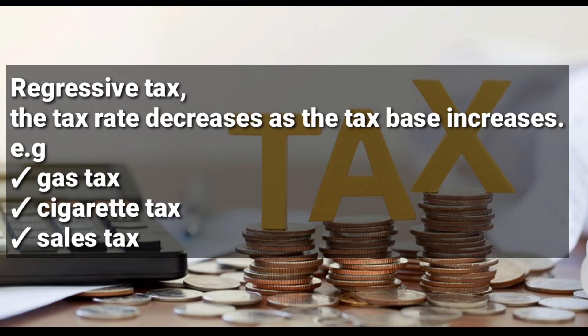For example, if a person is earning $10 and must pay $1 of tax on a package of cigarettes, this represents 10% of that person's income. But if a person is earning $20 and pays the same $1 as tax, it only represents 5% of their income. So the more income you have, the less tax you pay — that is regressive tax.